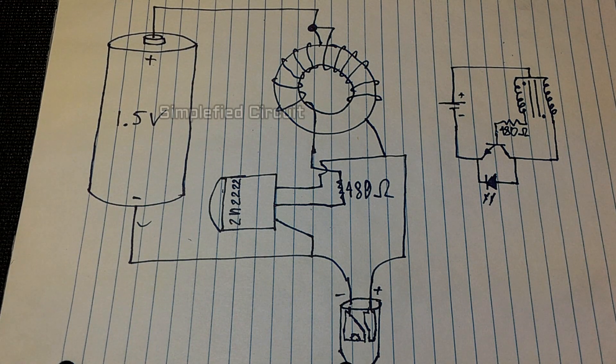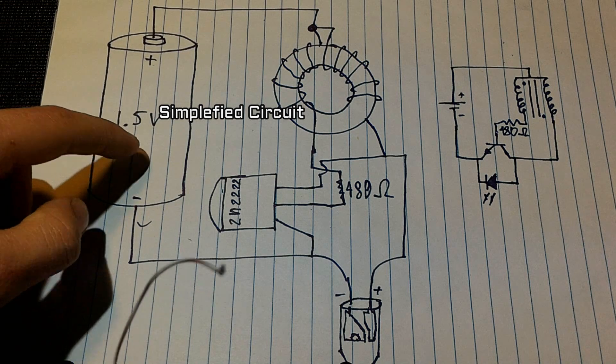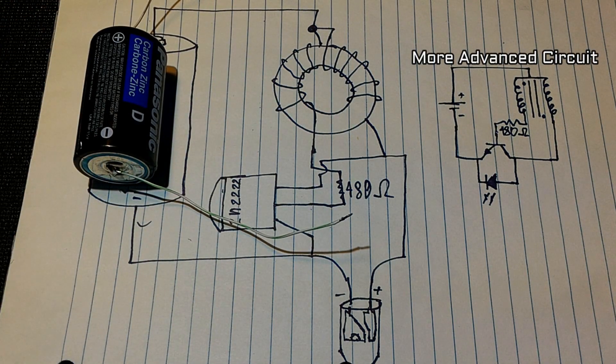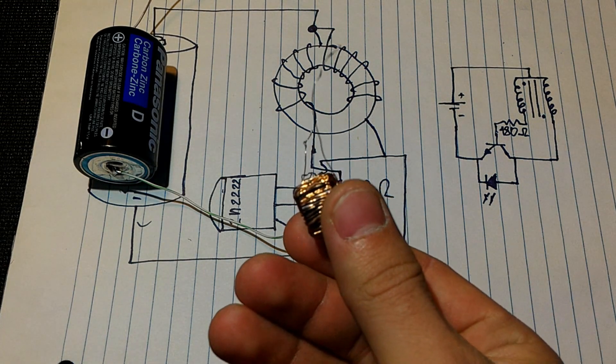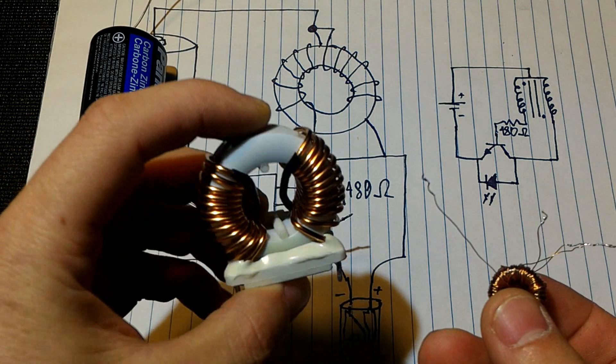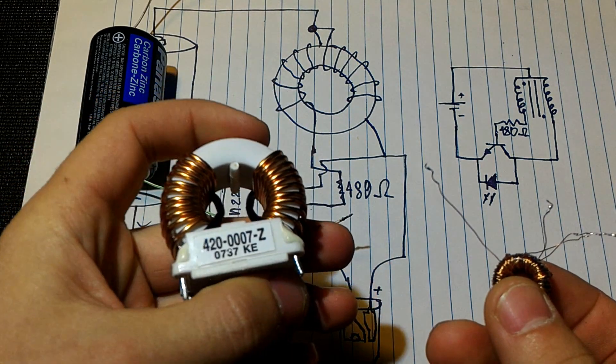So what parts do you need for this particular circuit? Well, you need a 1.5V battery. You will need an inductor. You can find one yourself or you can find one on a circuit board somewhere.